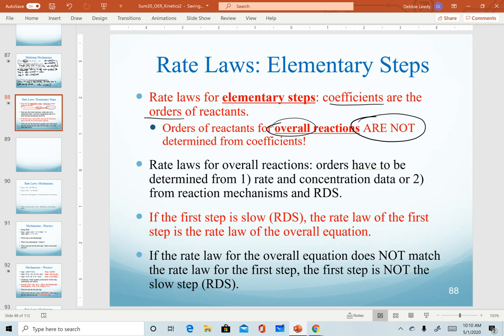To determine the rate law for an overall reaction, we either have to use rate and concentration data, remember our rate laws section earlier in this chapter, or we have to use information from our reaction mechanisms and the rate determining step. So we cannot use coefficients to determine the orders for our overall reaction.